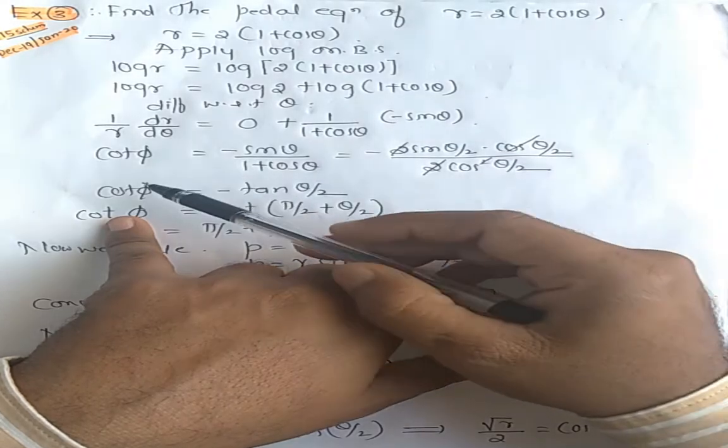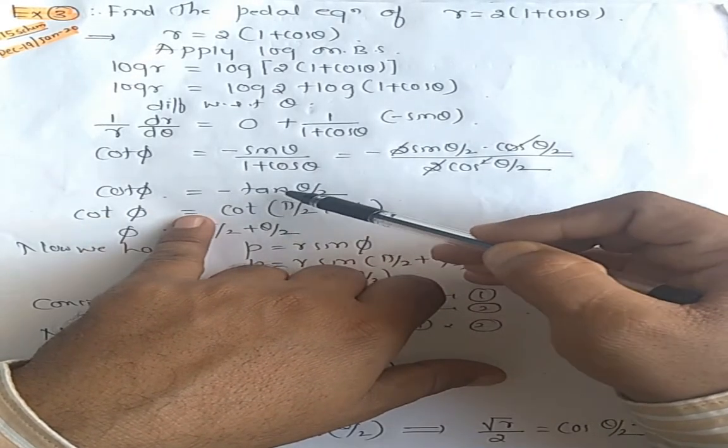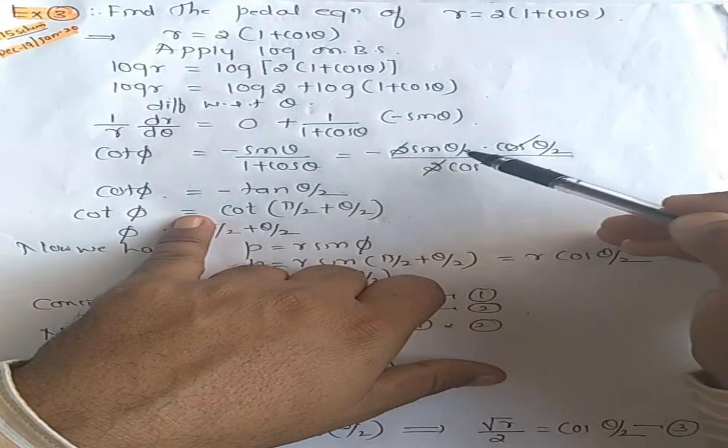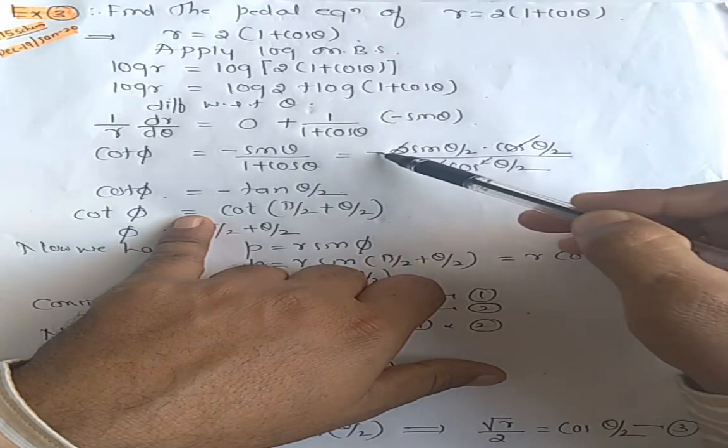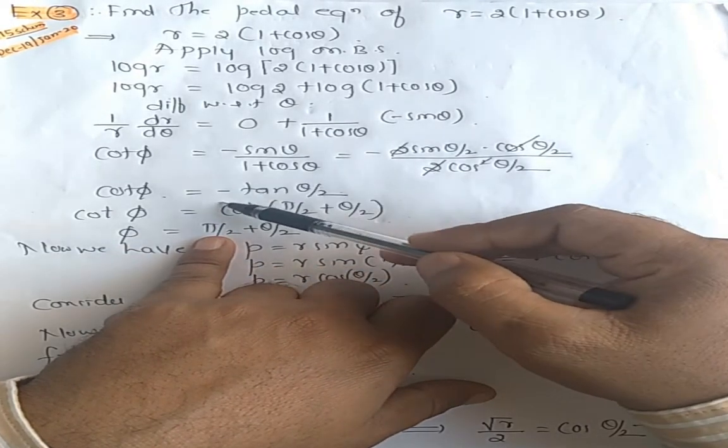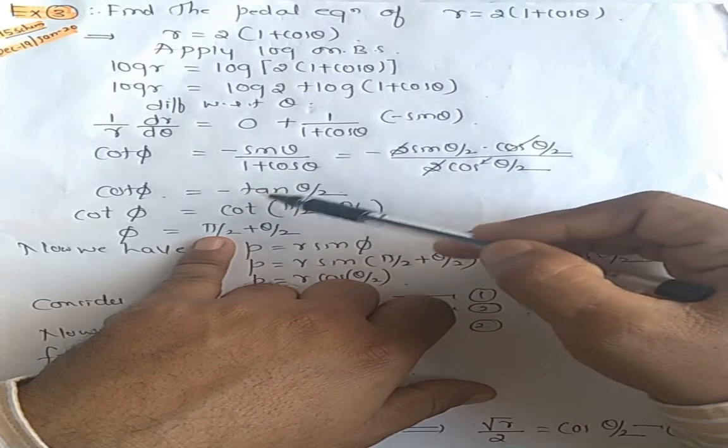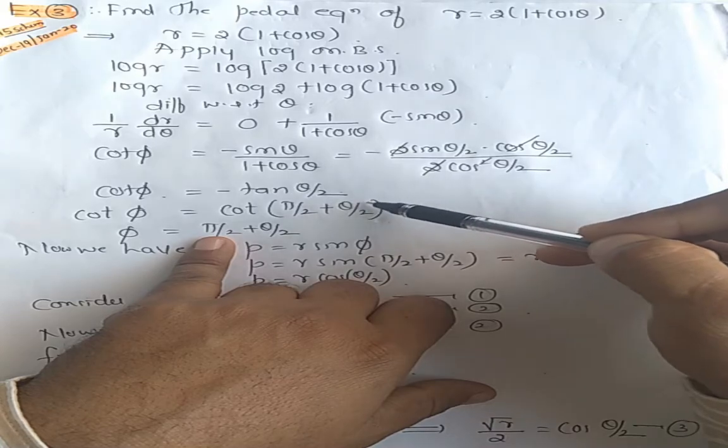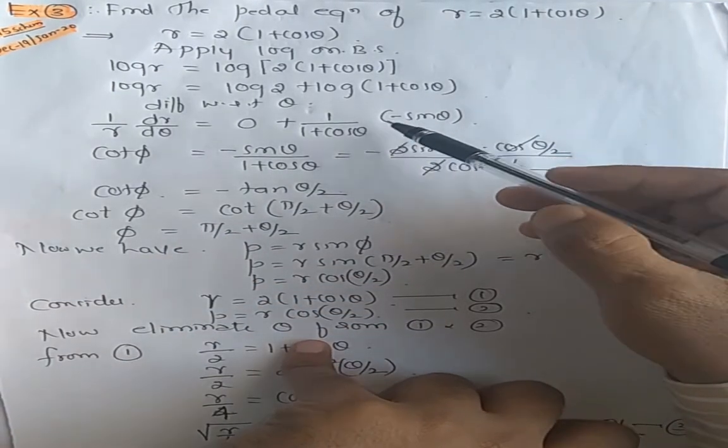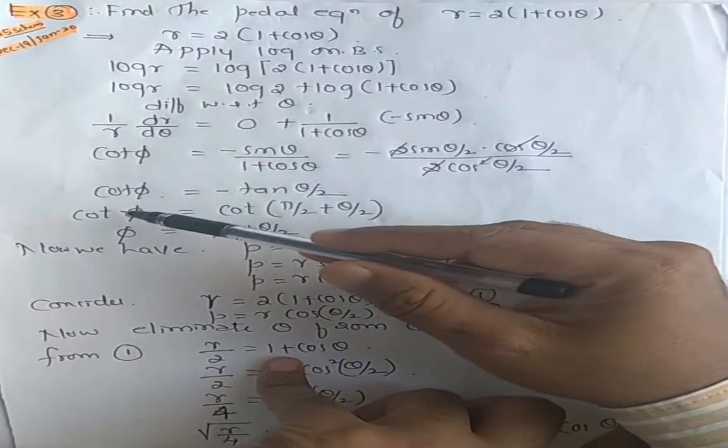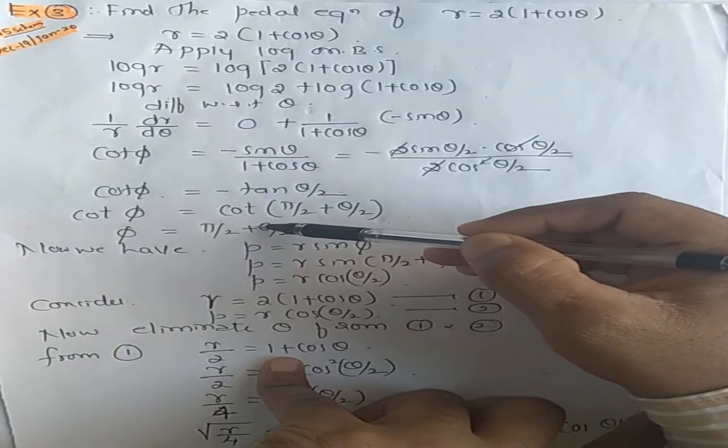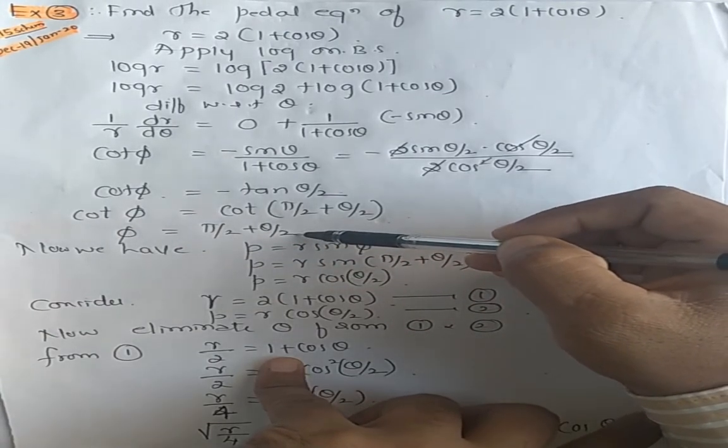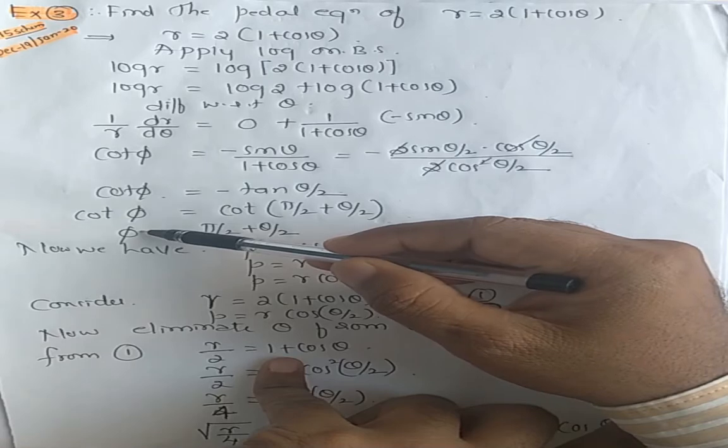Divided by 1 plus cos theta is 2 times cos square theta by 2. So cot phi equals minus tan theta by 2. You got this one: sine by cos is minus tan theta by 2. Using allied angles you can convert this in terms of cot, so cot of 90 plus theta. Therefore you will get cot cot cancelled, so phi is equal to 90 plus theta by 2.